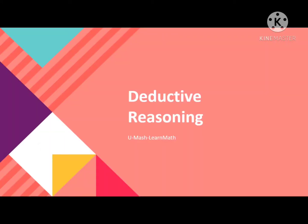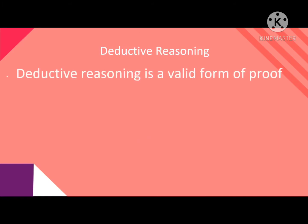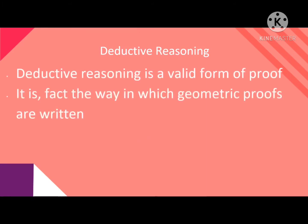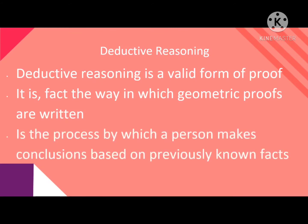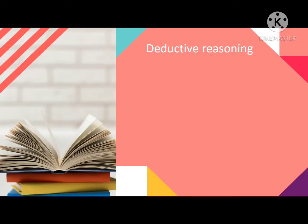Dear students, today we will discuss deductive reasoning. Deductive reasoning is a valid form of proof. It is the way in which geometric proofs are written. It is the process by which a person makes conclusions based on previously known facts.